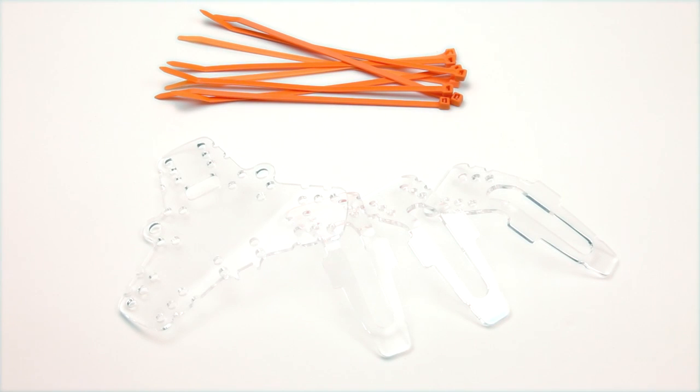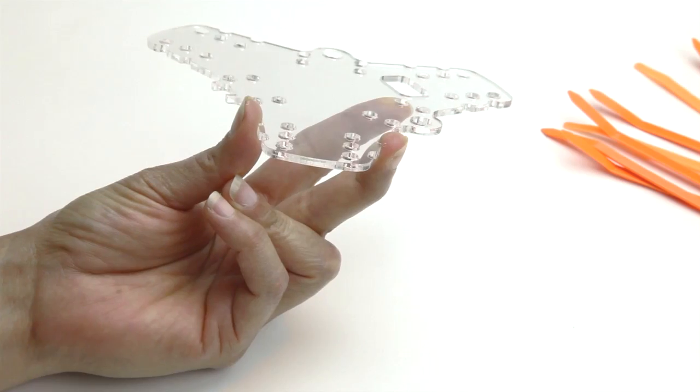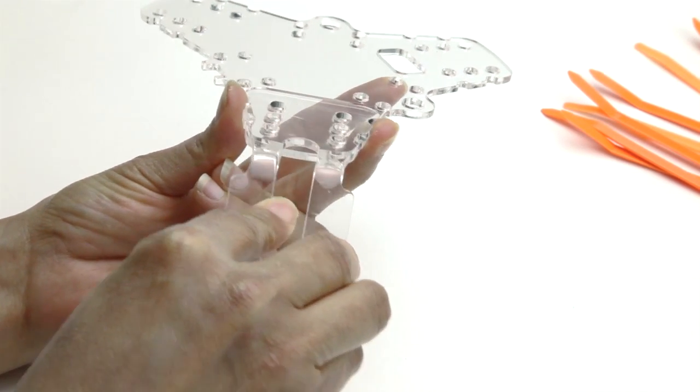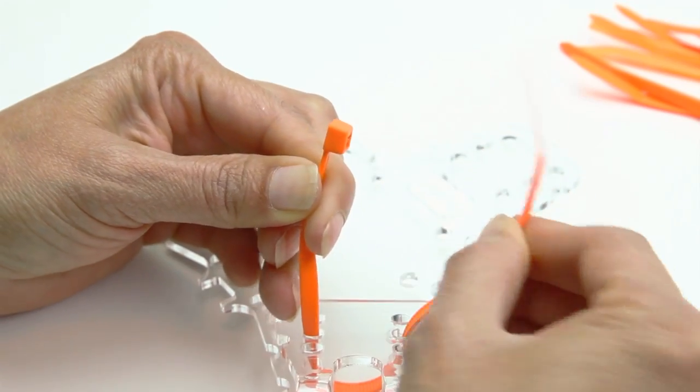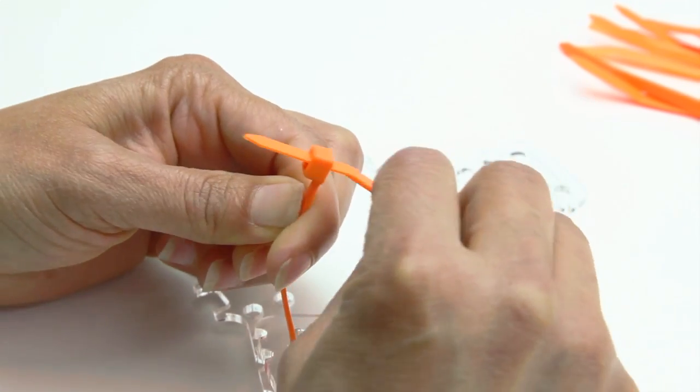Build the body of your SpinBot using zip ties. It's just that easy. Align each leg to the body so that the six holes line up, then attach it in place with a zip tie. If your zip tie won't catch, just flip it over to get it to grip. Attach the other two legs in the same way.